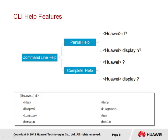VRP includes help features that support user command line configuration and navigation. The help features come in two forms: partial help and complete help. In both cases the question mark is used to define the help function. With partial help, the question mark is placed immediately after the entered word or character, and will assist in providing a list of possible commands that match the entered string.